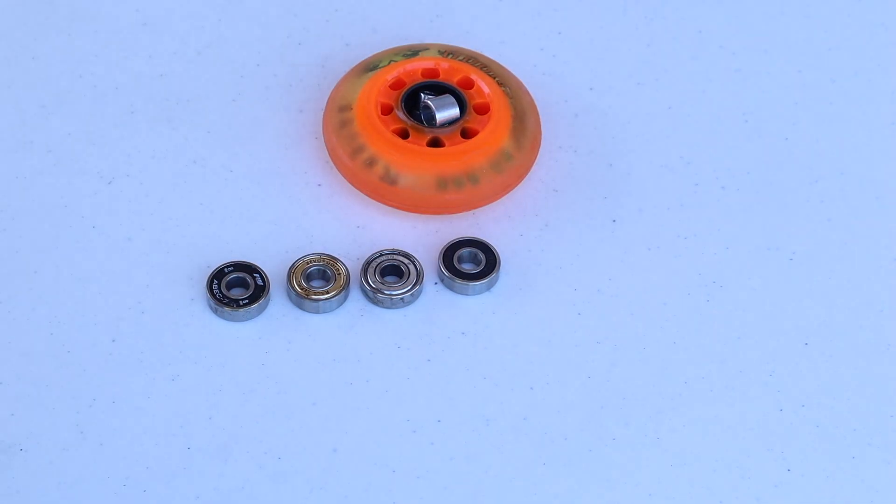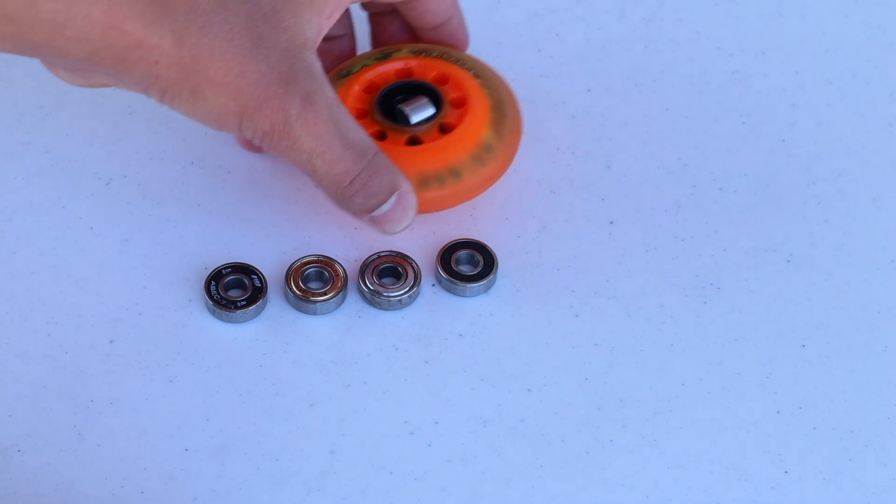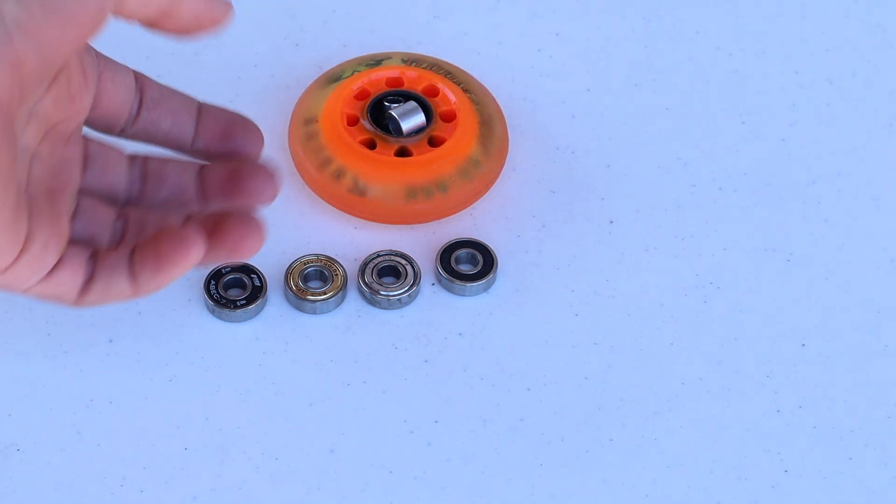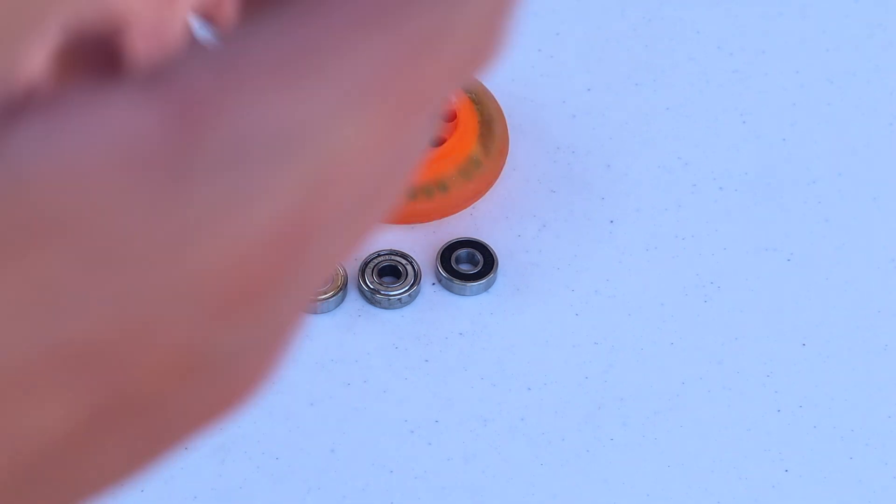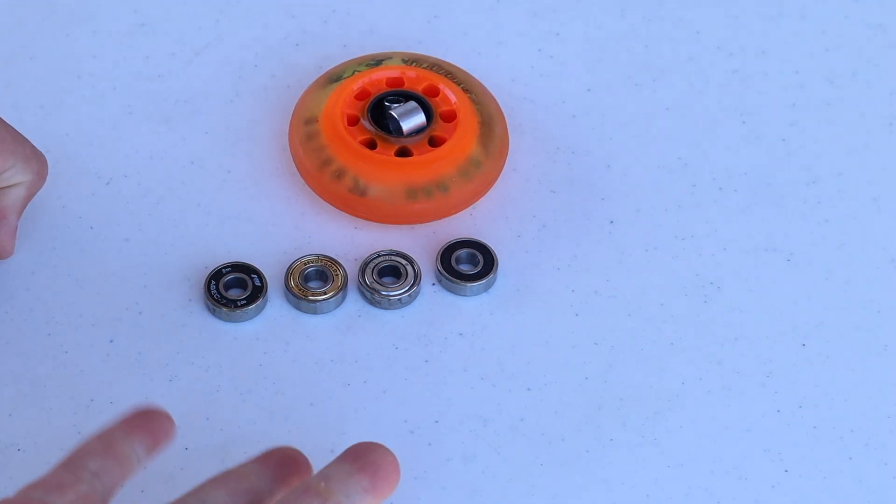So the higher the number, the better it's going to spin. The longer it's going to spin in your wheel, and that's obviously better because you're going to get more glide or push off when you're skateboarding or whatever.